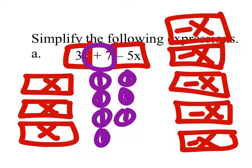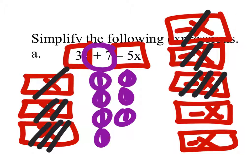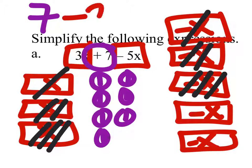From here we would cancel things out using those zero pairs. So that x cancels out that negative x. This x cancels out this negative x. And this x cancels out this negative x. So what are we left with? We have the 7 ones and the 2 negative x's. This is the expression.